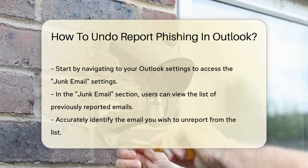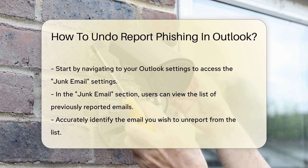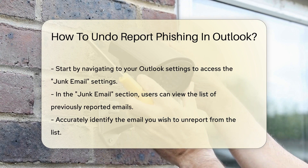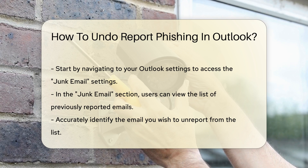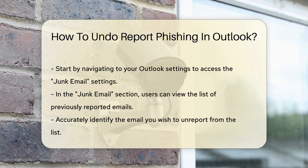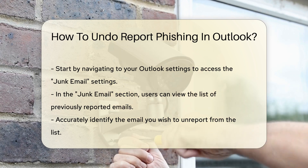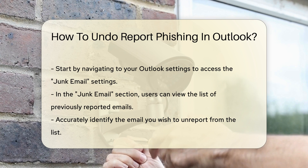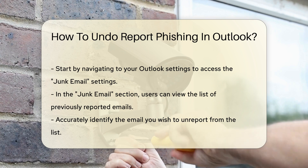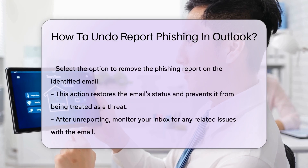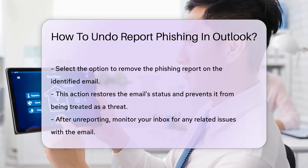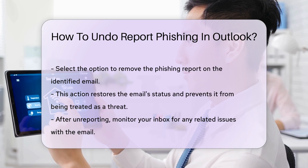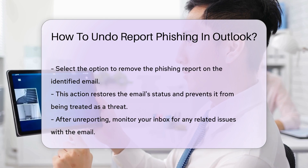To undo a phishing report, first navigate to your Outlook settings. Access the junk email settings where you can view the list of reported emails. Here, you will find options related to previously flagged messages. It is crucial to identify the email you wish to unreport accurately.